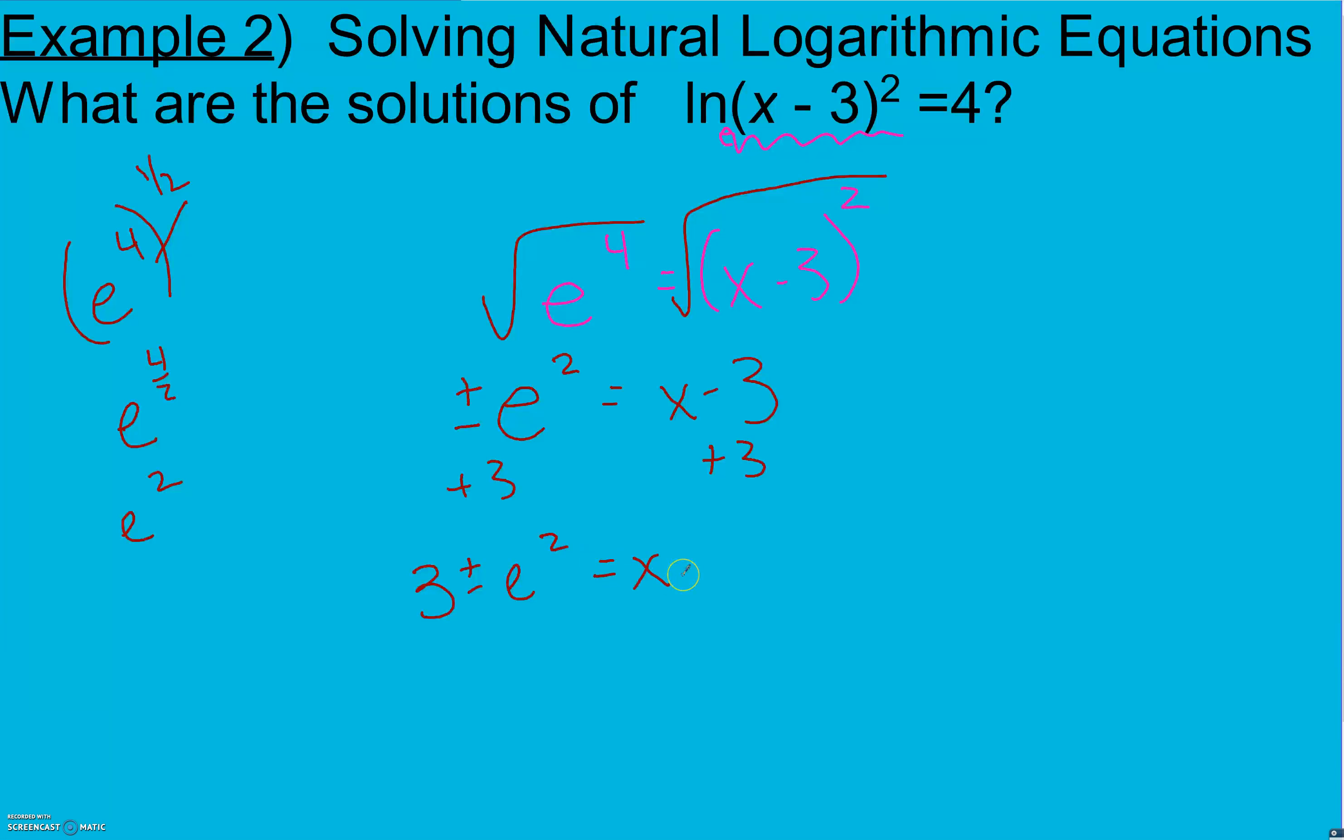Now when you type this in your calculator, we take 3 plus second ln key 2 gives me a value of approximately 10.389 for my plus. For my minus I take 3 minus second ln key 2 and I get approximately negative 4.389. We're going to want to check these answers. Always check your answers with logarithms because our domain is restricted with logarithms, so we always want to double check and just make sure. Big thing here to remember when we're checking this is that this is squared, not the logarithm itself.